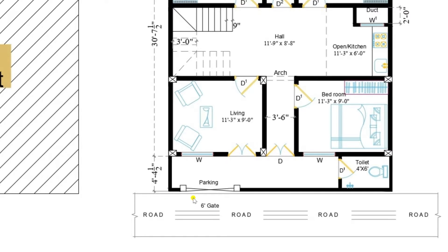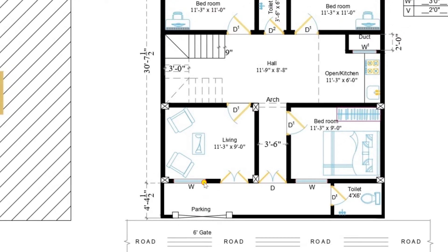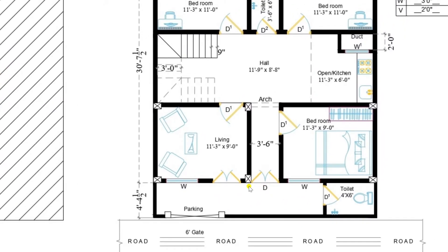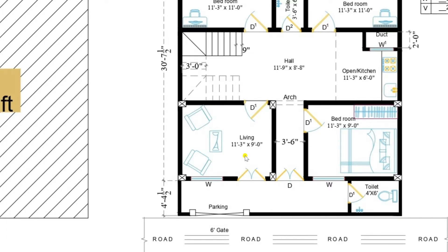Now entering into the plan in detail: there is a gate of size 6 feet and parking of area 4 feet 4 and a half inches. This area provides plenty of space for parking motorbikes. There are two entrances available — one is the main entrance, and another entrance is for the purpose of the guest room.